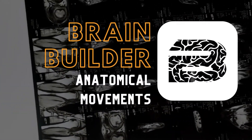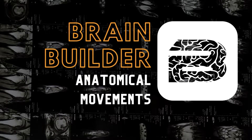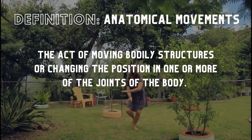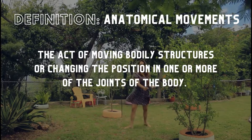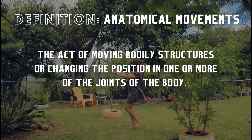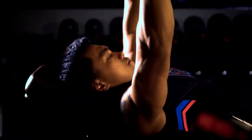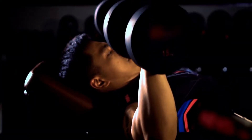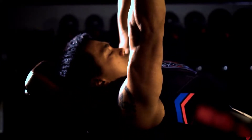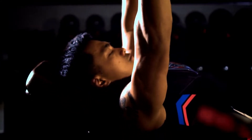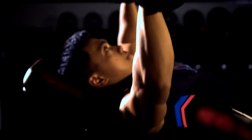Today we are going to look at a BodyViz Brain Builder about anatomical movements. Anatomical movements are the act of moving bodily structures or changing the position in one or more of the joints of the body. Through contraction and relaxation, muscles produce movements at the joints that can be described clearly using anatomical movement terminology. Let's look at six common pairs of anatomical movements and their antagonist movements.